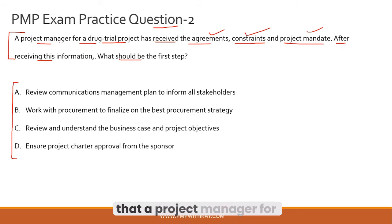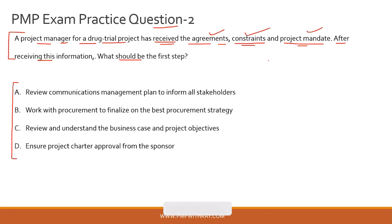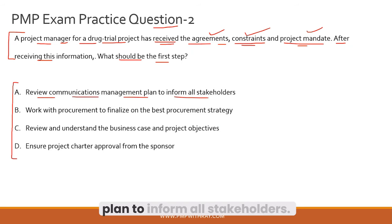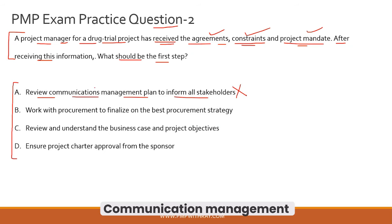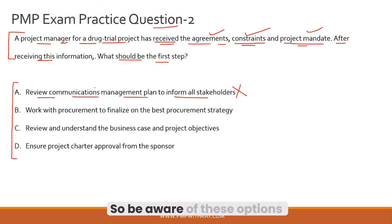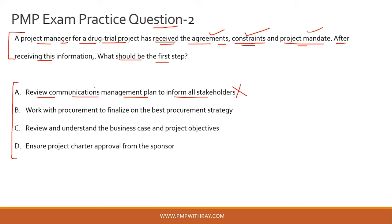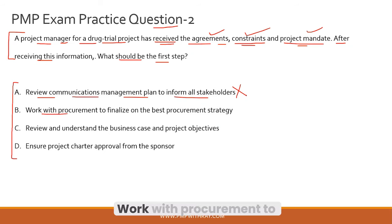The question asks what should be the first step after receiving these artifacts. Option A — review the communications management plan to inform all stakeholders — is incorrect, because you are still in the initiation phase and the communications management plan has not yet been prepared. Be aware of options presenting artifacts that haven't been generated at a particular stage — this is a classic wrong answer choice.